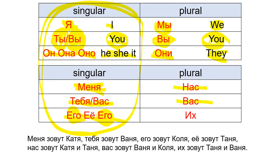And this is the plural: нас, вас, их. When we talk about names, we say нас, вас, их in plural form: меня, нас, тебя, вас, его, её, их. Some examples: Меня зовут Катя — Катя is a female Russian name. Тебя зовут Ваня — Ваня is a male name. Его зовут Коля — его is for masculine, so Коля is a male name. Её зовут Таня. Нас зовут Катя и Таня. Вас зовут Ваня и Коля. Их зовут Таня и Ваня. I think if it is a little bit tricky for you now, it will continue to get easier with time.